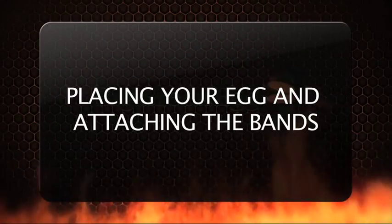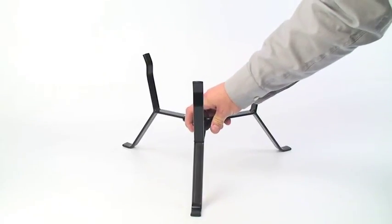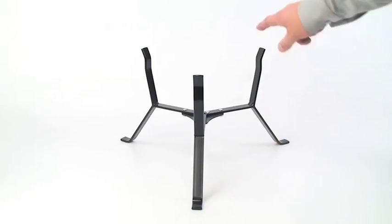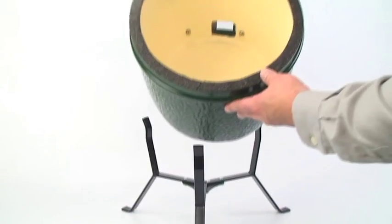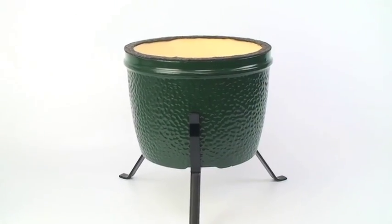Placing the egg and attaching the bands to the base and dome. You are now ready to attach the bands to the egg base and dome. Make sure the nest is sitting on a flat and stable surface with one leg directly in front of you. Now place the base so that the draft door is facing outward and is in between the other two legs.